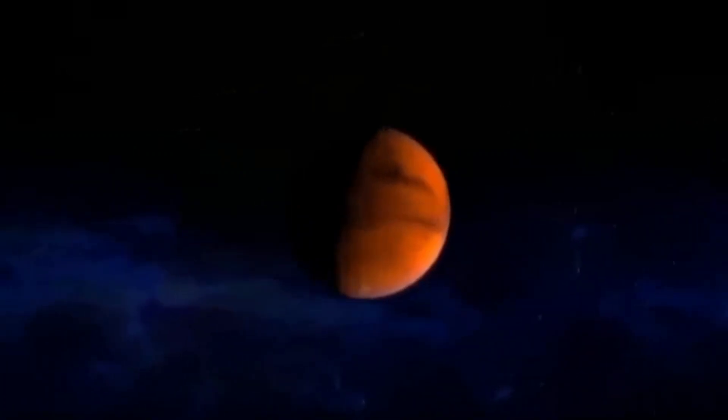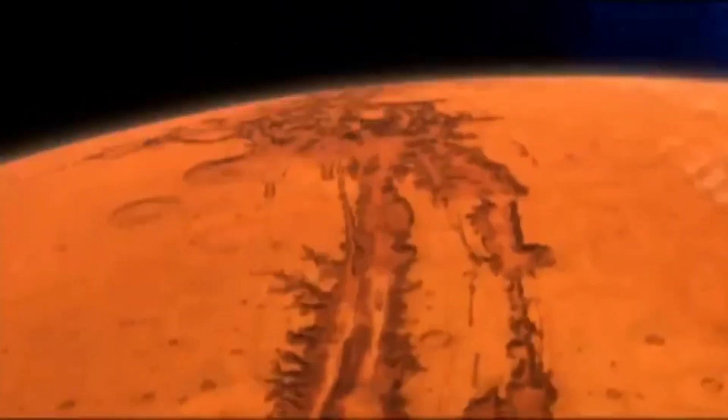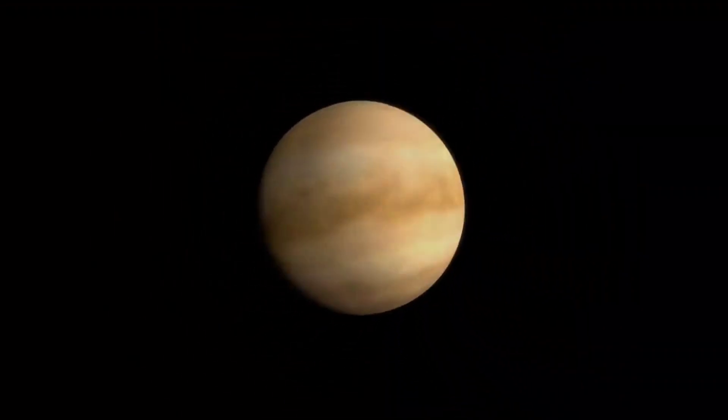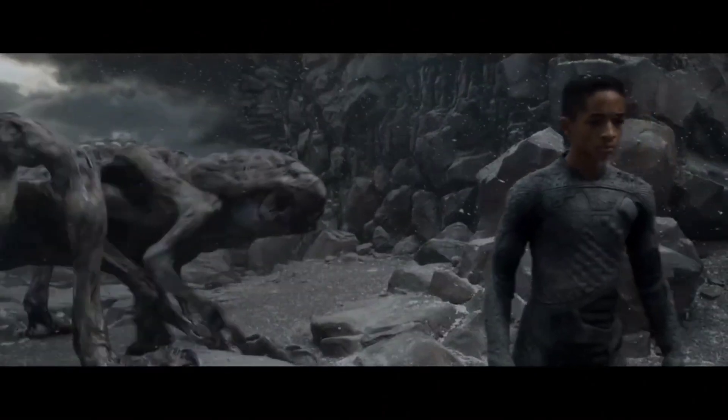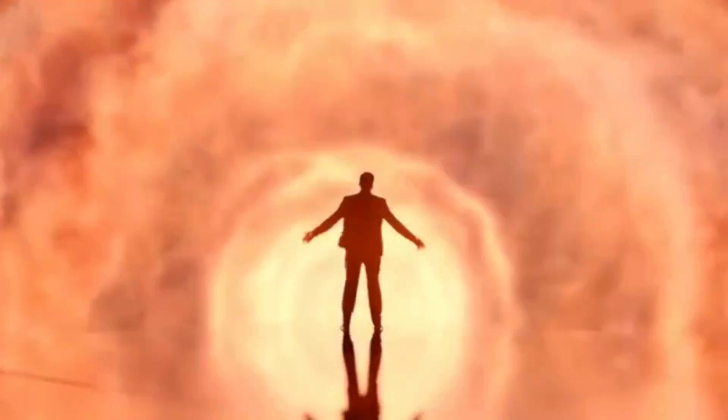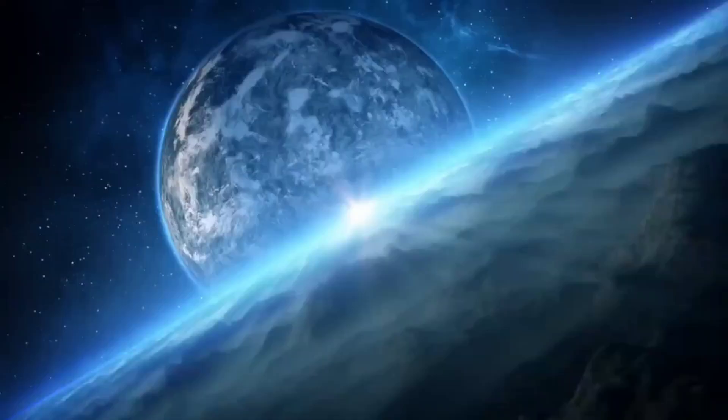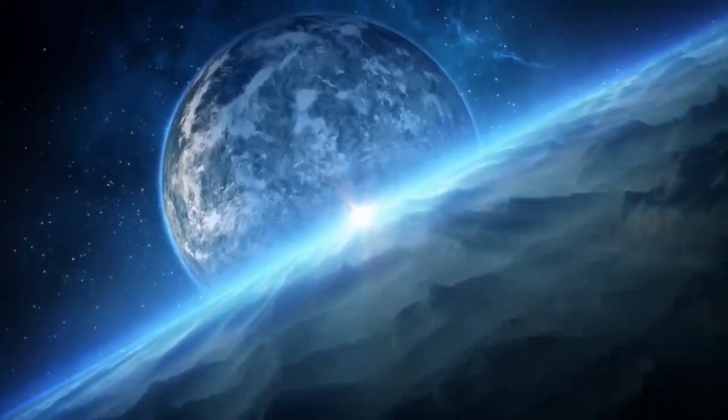Events that could happen in the Anthropocene are colonizing Mars, terraforming Venus, building space elevators, and encountering alien life either in the solar system or beyond. But the Anthropocene is only a blink of an eye in the Cosmic Calendar, the scale that measures the Universe's history from the Big Bang to the present.